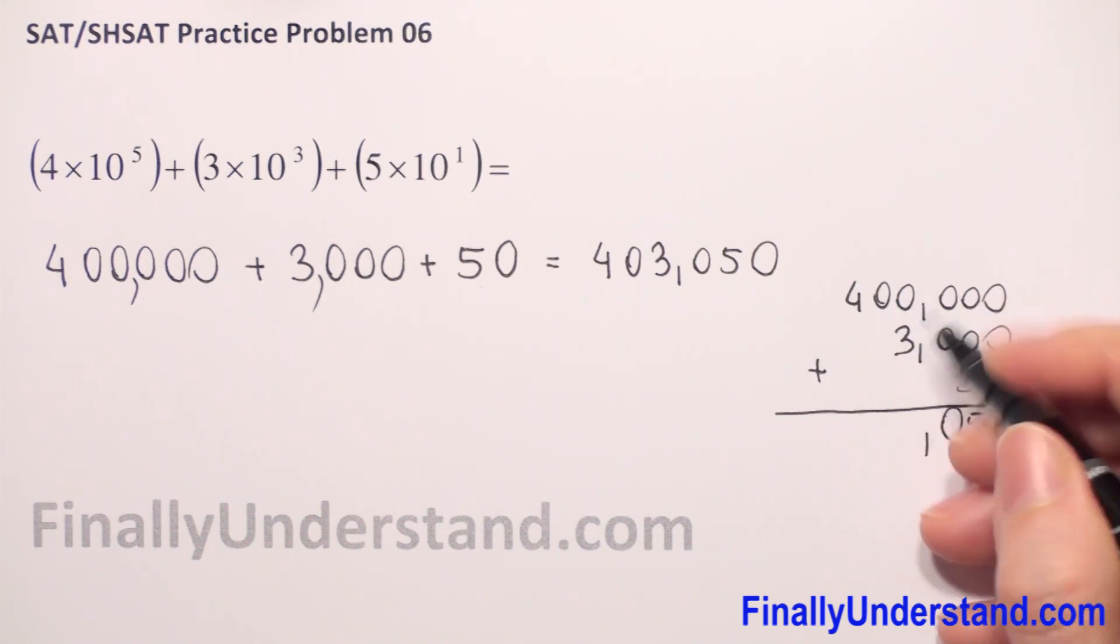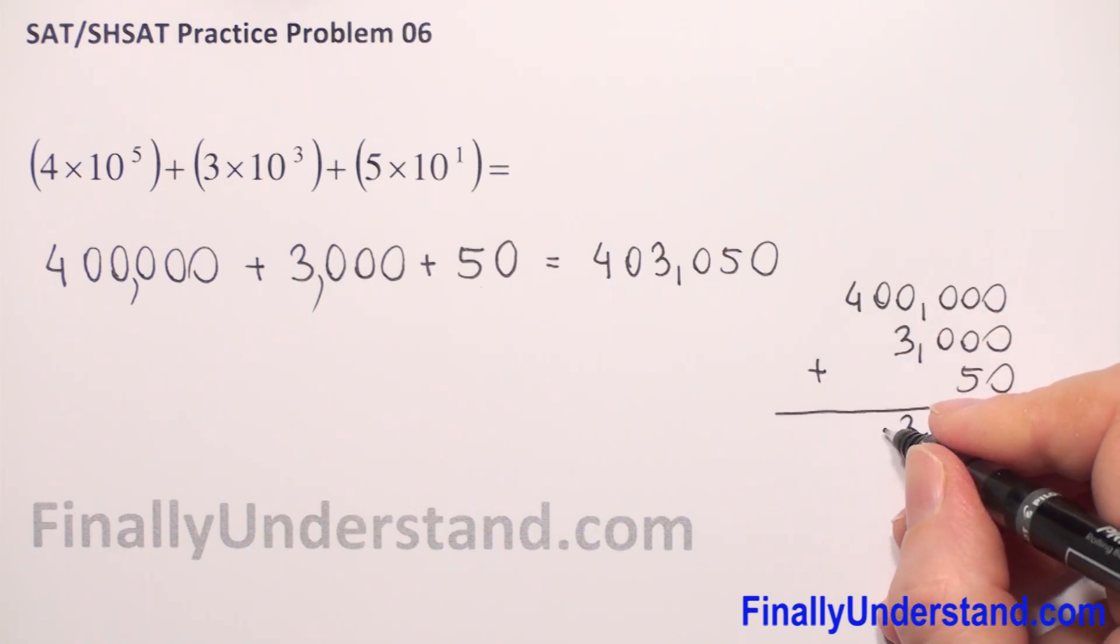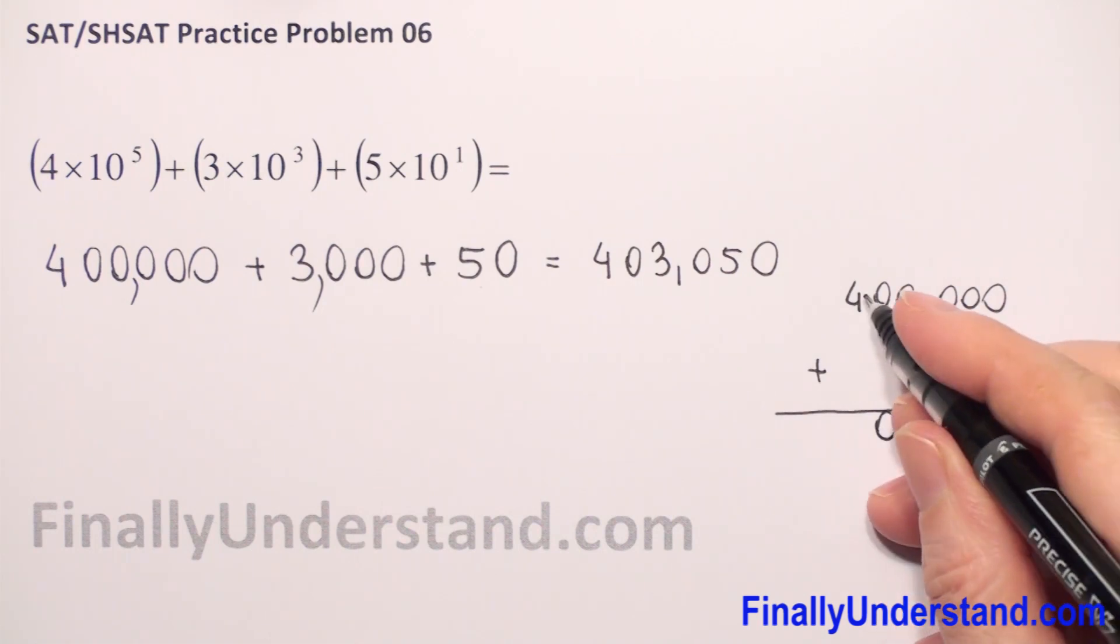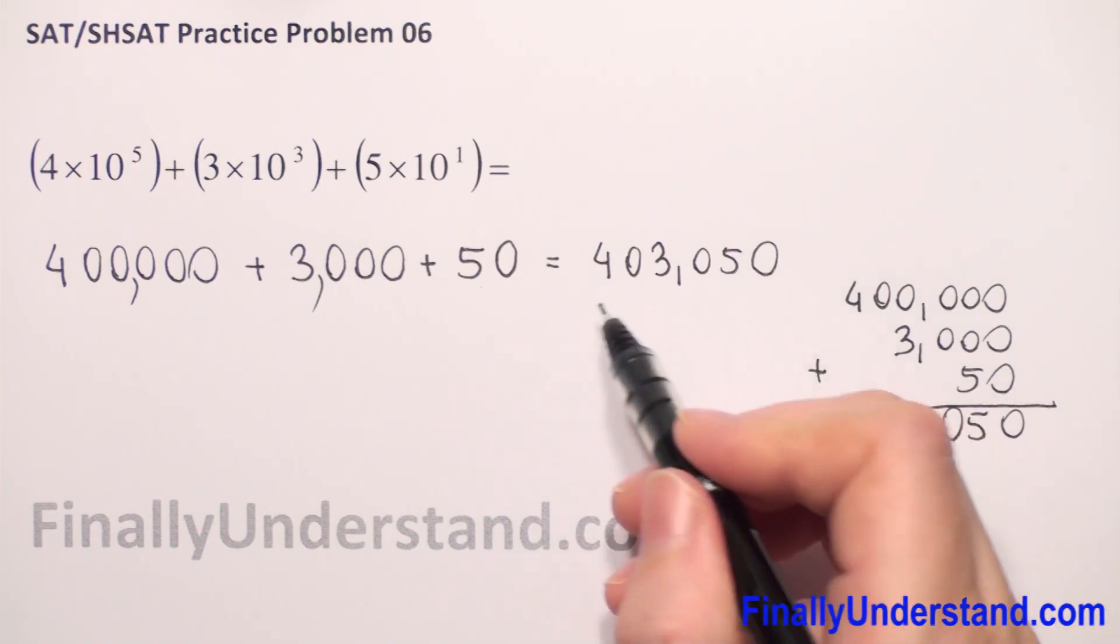We copy comma. 0 plus 3 is 3. 0 and we don't have any digits, so we have only 0 and 4. Empty space, so we have only 4. So we got the same: 400,000, 3,000, 50. This is my solution.